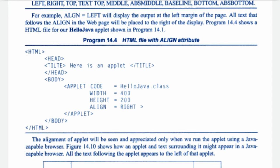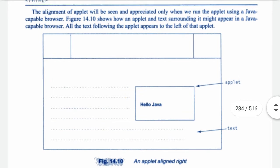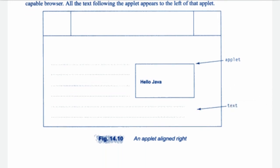All text that follows the align attribute in the web page will be placed to the right of the display. Program 14.4 shows an HTML file for our Hello Java applet. The alignment of the applet will be seen and appreciated only when we run the applet using a Java-capable browser. Figure 14.10 shows how an applet and the text surrounding it might appear — all text following the applet appears to the left of the applet.